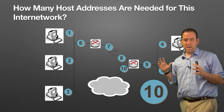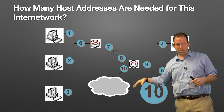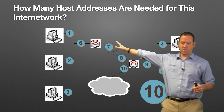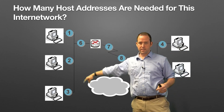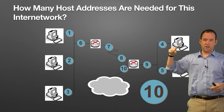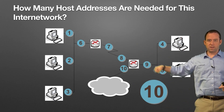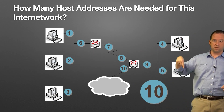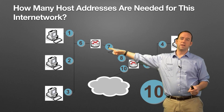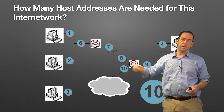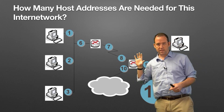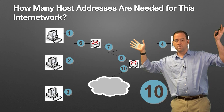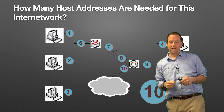We have three different networks plus the network to the cloud — so four different networks total. One over here with these hosts, one over here, the router with those two devices, the one in between, and finally the connection to the outside world — out to the internet, the mythical cloud.